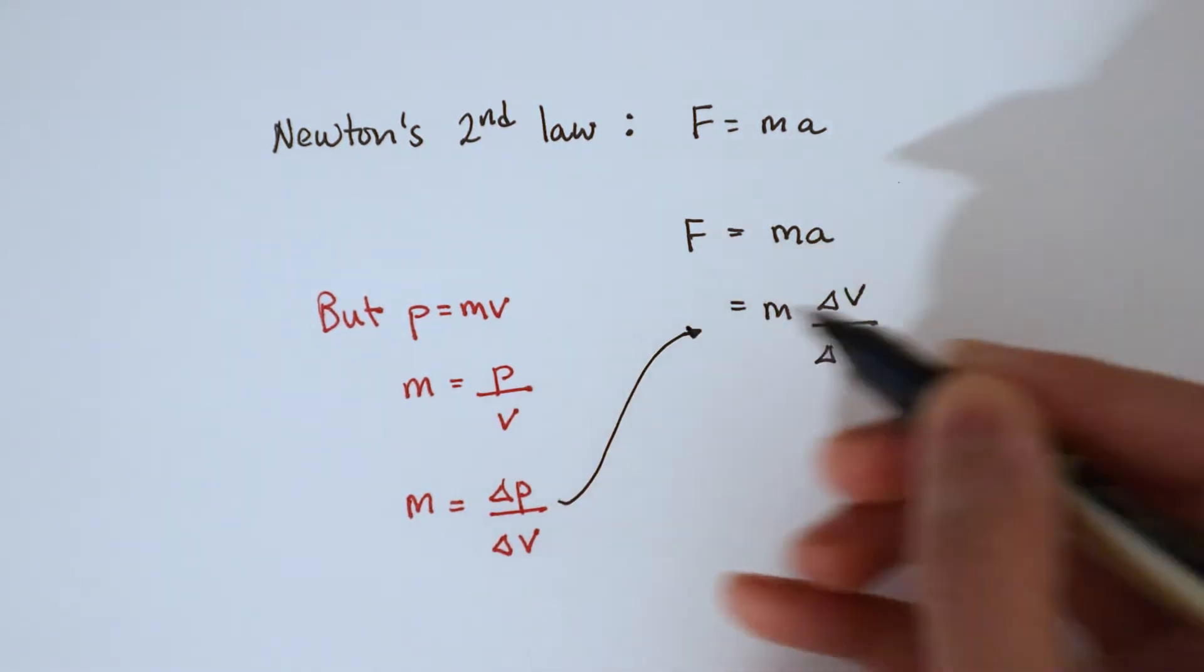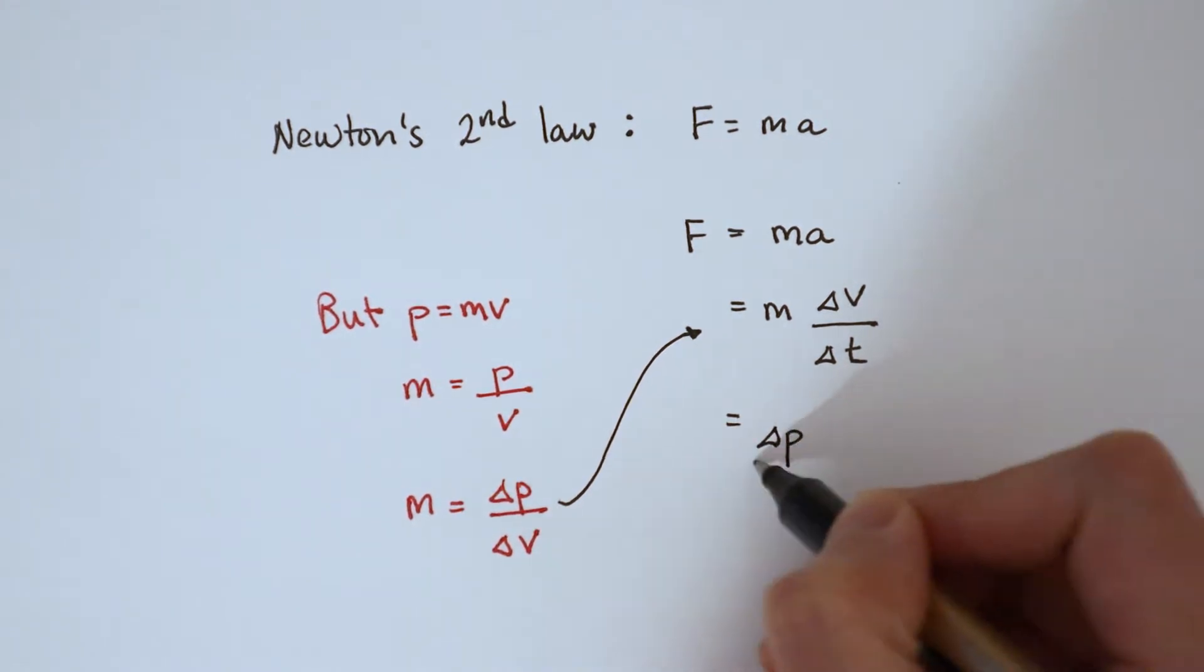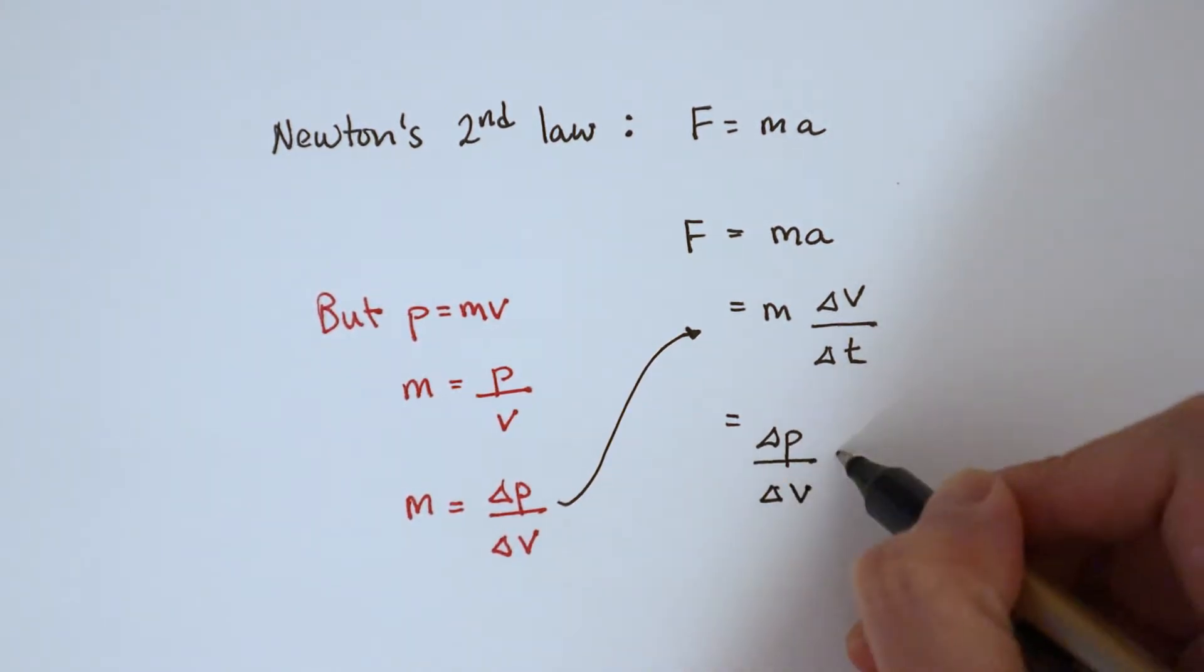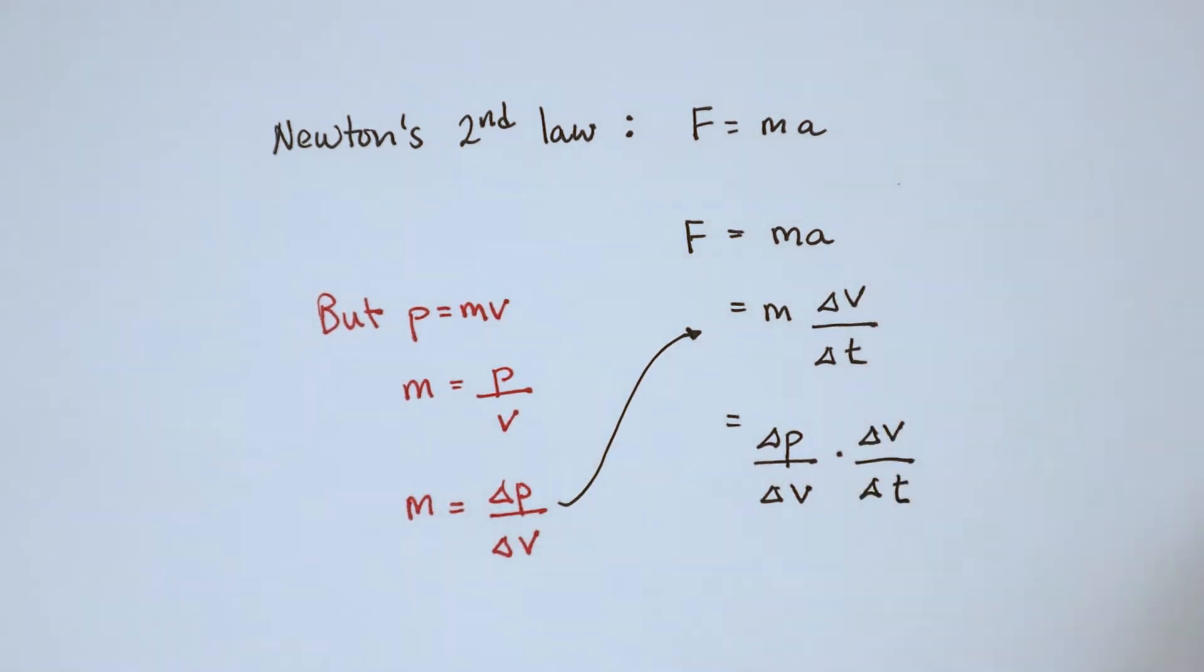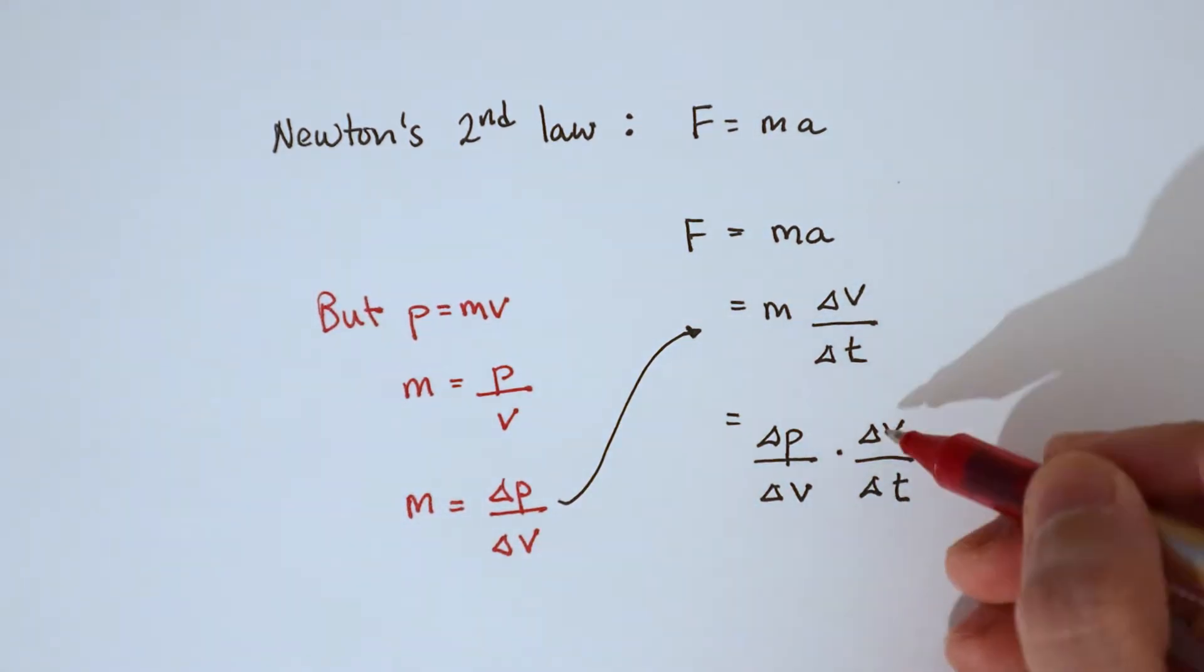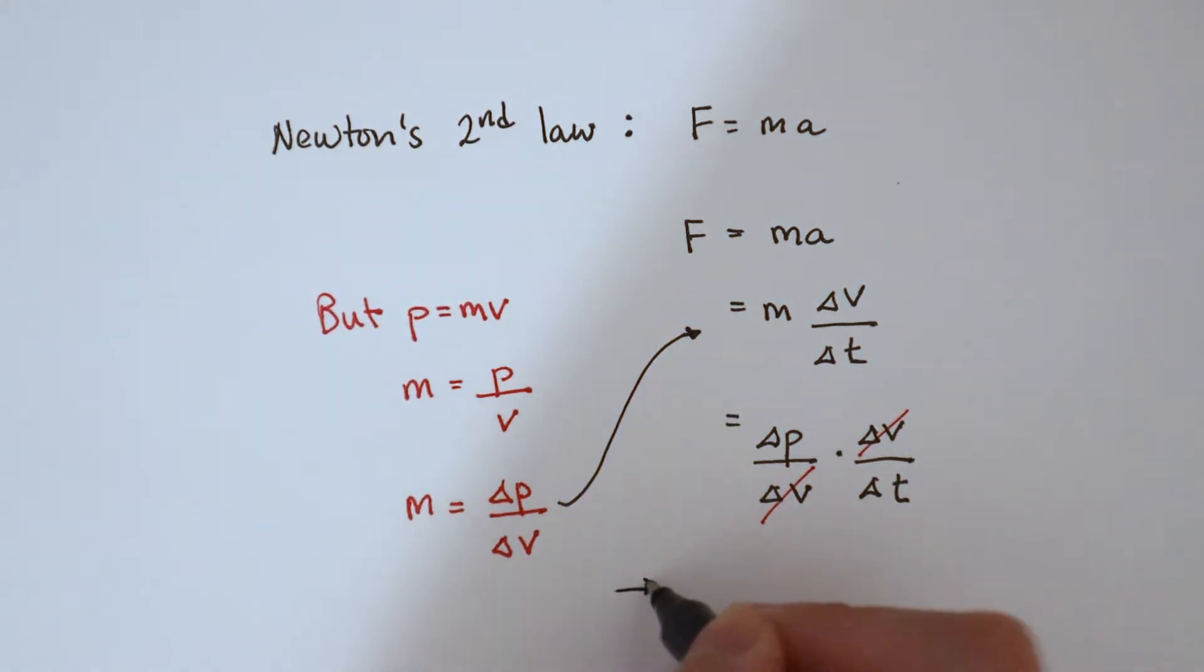So let's substitute it back into F equals ma. So that gives us force is equal to delta p over delta v times delta v over delta t. The delta v's cancel out, leaving us with force is equal to the change in momentum divided by the change in time.